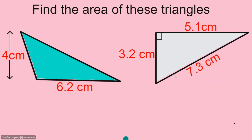This next triangle is a stretched-out triangle with a base of 6.2 centimeters and a vertical height of 4 centimeters. An important note: the height should always be at 90 degrees, or perpendicular, to the base. The 4 centimeters is not the slope height — it is the vertical distance from the top down to the base, making a right angle with it.